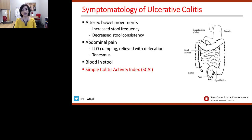What symptoms does a patient with ulcerative colitis have? There's change in bowel patterns, increased stool frequency, and variation in consistency. There's abdominal pain, mostly left-sided, reported as cramping, relieved with defecation. There's an incomplete feeling of evacuation, labeled as tenesmus. And then bloody stools. We use a clinical instrument called the Simple Colitis Activity Index in clinic to evaluate the type of symptoms reported by our patients.